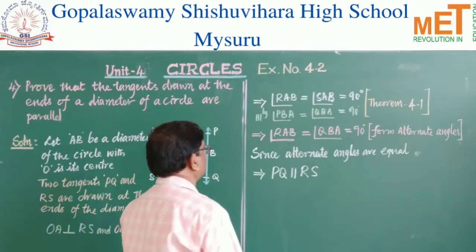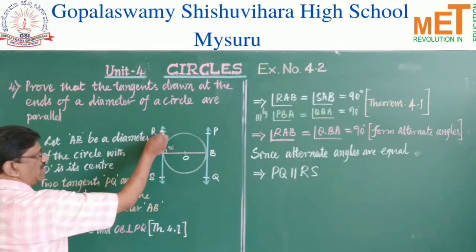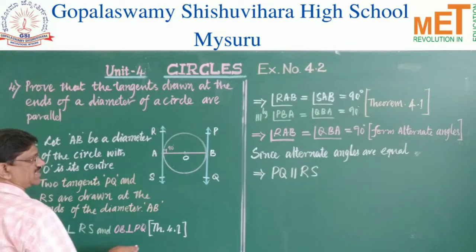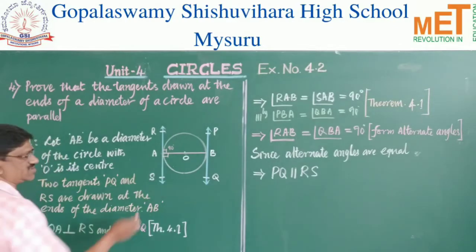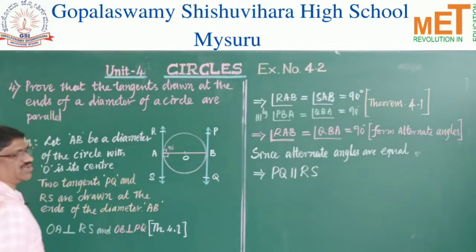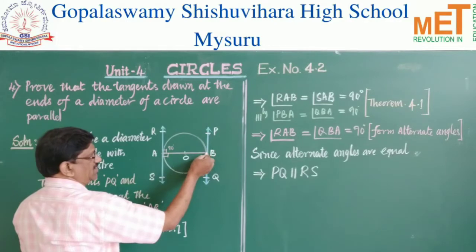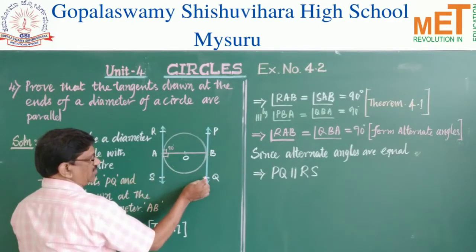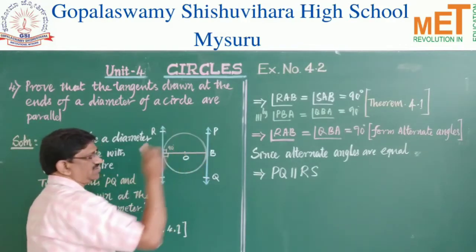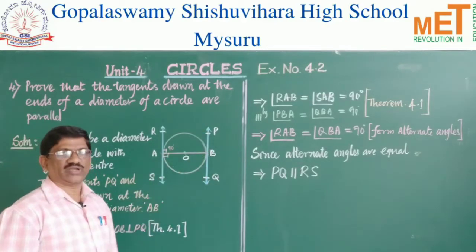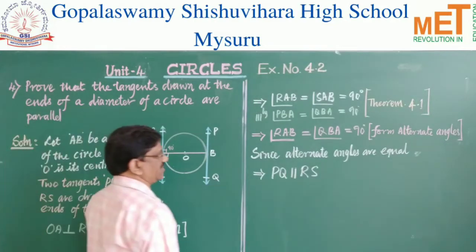Since they are perpendicular to each other, angle RAB is equal to angle SAB — they form 90 degrees because the radius and the tangent at the point of contact meet at 90 degrees. Similarly on the other side, angle PBA is equal to angle QBA, which is equal to 90 degrees, for the same reason: the radius and tangent at the point of contact are perpendicular to each other.